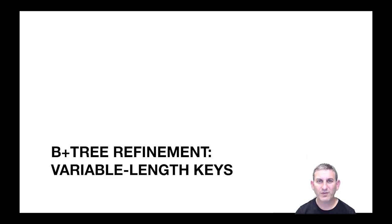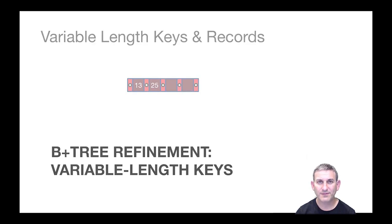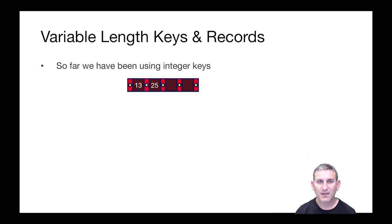Our next topic is a refinement on B+ trees to deal with variable length keys. So far in our lectures, we've been using integer keys in our examples, things like 13 and 25.